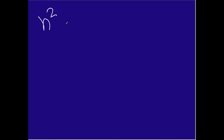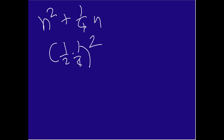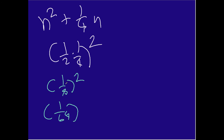This one is also a little tricky, but if you follow the steps it shouldn't be too hard. Let's say I have n squared plus 1 over 4 times n. This is my b term. I need to do one half times 1 over 4, then square that. One half times 1 over 4 is 1 over 8, and squaring that gives 1 over 64. So this will be my c term to create my trinomial expression. We now have n squared plus 1 over 4n plus 1 over 64.